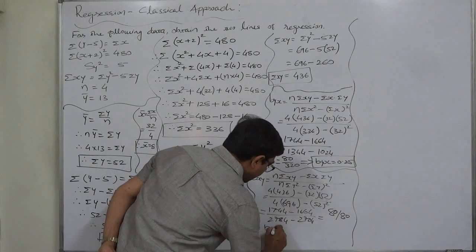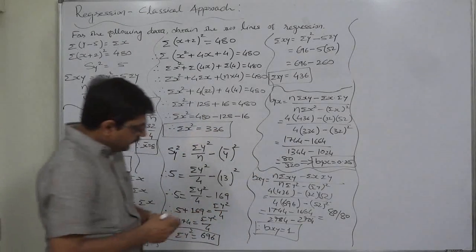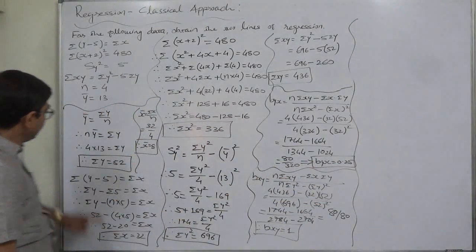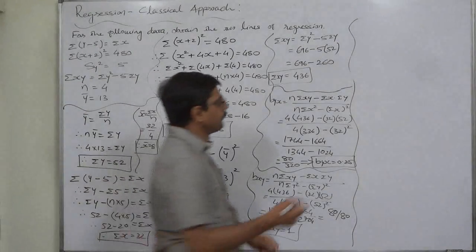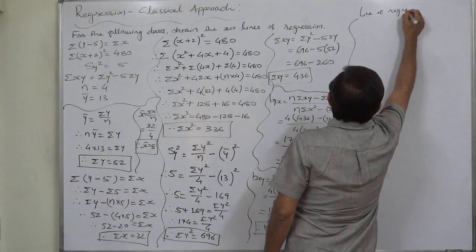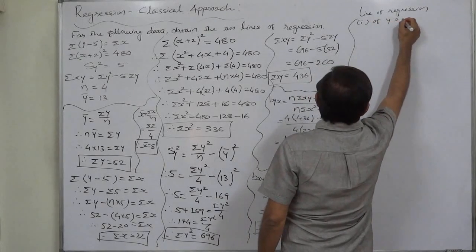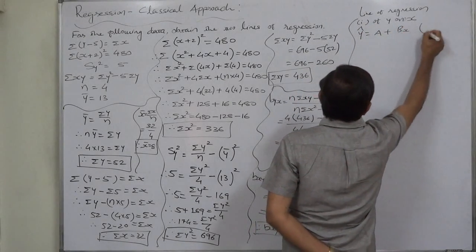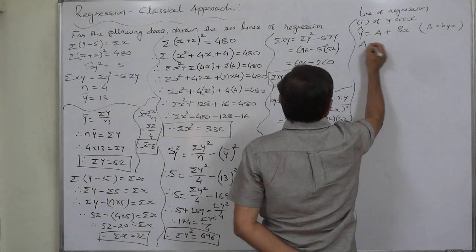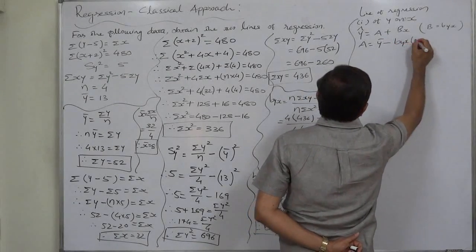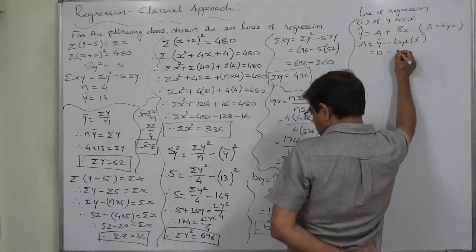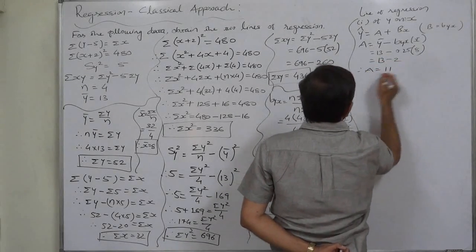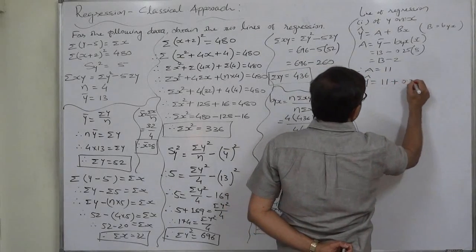One of the two coefficients is 1 and the other is less than 1, which is consistent. Now we have b_yx, b_xy, x̄, and ȳ. The line of regression of y on x is ŷ = a + b_yx·x. First find a = ȳ − b_yx·x̄ = 13 − 0.25×8 = 13 − 2 = 11. So the regression line of y on x is: ŷ = 11 + 0.25x.